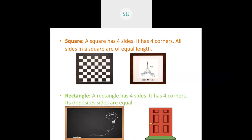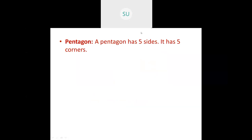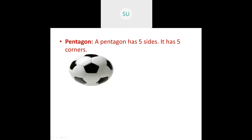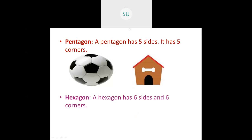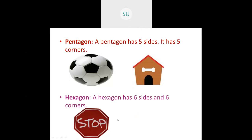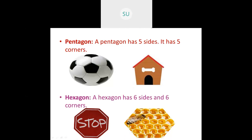These shapes aren't a priority for your level, but I'll tell you about them. A pentagon has five sides and five corners — the black part of a football and a dog house look like pentagons. A hexagon has six sides and six corners — examples include a stop sign and a honeycomb, which contains small hexagon shapes.